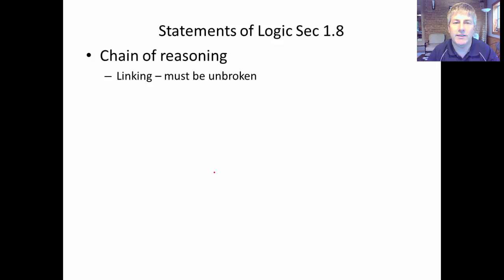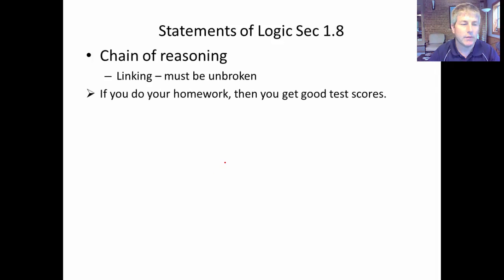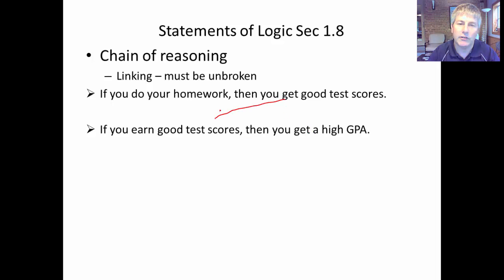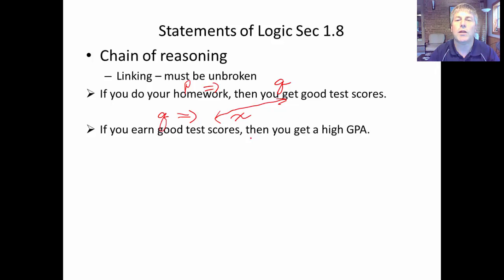We will also do chains of reasoning, linking statements together: if this, then that, then that — stringing things together in an unbroken chain. Here's an example: 'If you do your homework, then you get good test scores' — that's p implies q. Then 'If you earn good test scores, then you get a high GPA' — good test scores becomes the new hypothesis, so q implies x. Continuing: 'If you get a high GPA, you make your parents happy' — so x implies happy parents.